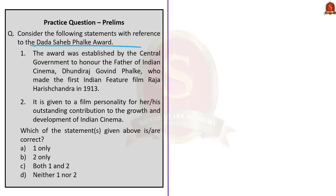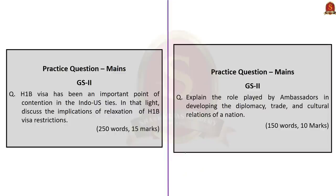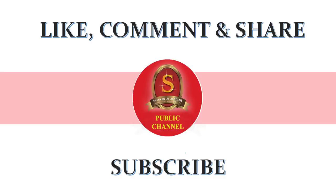Question on the Dadasaheb Phalke Award: Statement 1 — the award was established by the central government to honor Dundiraj Govind Phalke, father of Indian cinema, who made the first Indian feature film Raja Harishchandra in 1913 — is correct. Statement 2 — it is given to a film personality for outstanding contribution to the growth and development of Indian cinema — is also correct. Correct answer is option C: both 1 and 2. Practice mains questions are displayed; write your answers and post them in the comment section. This concludes today's The Hindu News Analysis. If you like the video, click like, comment, share, and subscribe to Shankar IAS Academy YouTube channel.